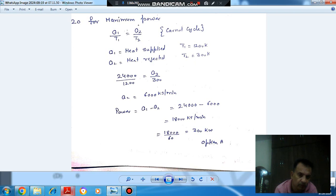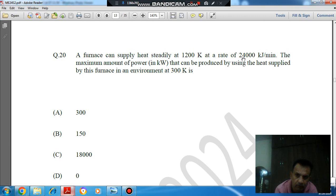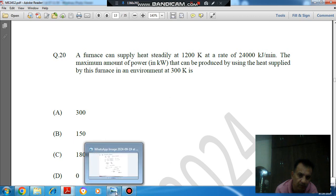Q1 is given as 24,000 kW per minute, and T1 is 1200, and T2 is the environment at 300.